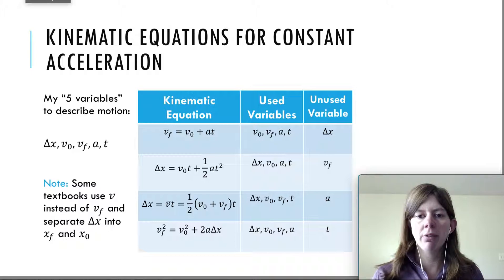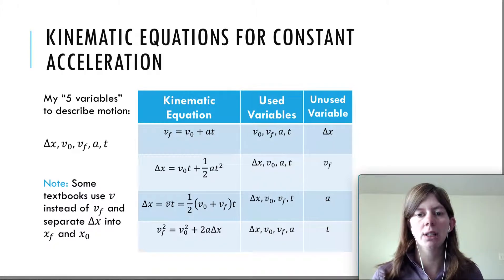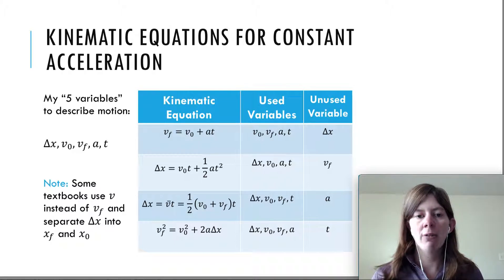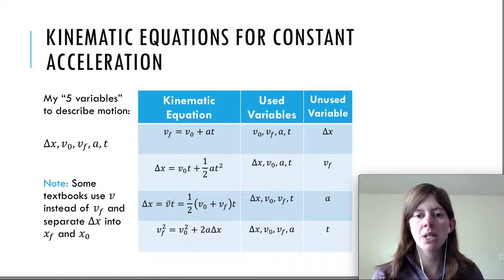As of now we can only solve problems involving average velocity and average acceleration. So for example, what if we know the acceleration, we know how fast we started, and we know how far we went, and we want to know how long it took to get there? Then we need some other equations that would relate these variables.